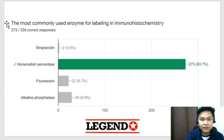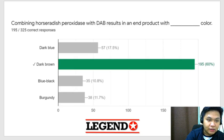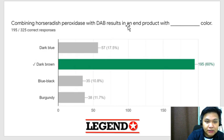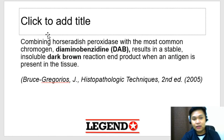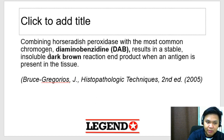Most commonly used enzyme for labeling in immunohistochemistry — this is your horseradish peroxidase. Related question: combining horseradish peroxidase with DAB (diaminobenzidine), the most common chromogen/substrate, results in an end product with a dark brown color. So: most common enzyme = horseradish peroxidase; most common chromogen/substrate = diaminobenzidine (DAB); positive result = dark brown.